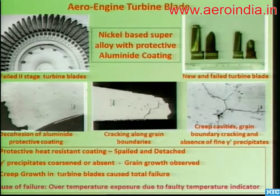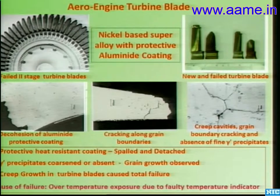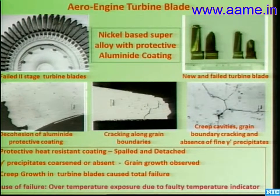A catastrophic engine failure occurred due to over-temperature exposure from a faulty temperature indicator. When opened, all blades had failed. Investigation revealed coarsening of the gamma prime phase and creep voids at grain boundaries, indicating the blades had seen higher temperature. Gamma prime coarsening or reduction indicates high temperature and dissolution of intermetallic precipitates that provide strength. Intergranular (grain boundary) cracking related to creep crack growth was also observed, and the thermal barrier coating had spalled. All these factors led to failure.